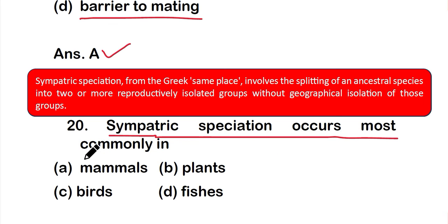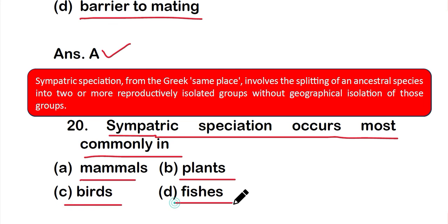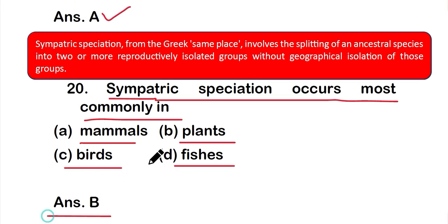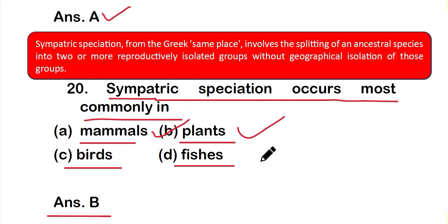Question 20: Sympatric speciation occurs most commonly in — option A: mammals, option B: plants, option C: birds, or option D: fishes. The correct answer is option B — plants. Sympatric speciation occurs most commonly in plants. These are all 20 questions of Part 1 of the video on evolution. Thank you for watching.